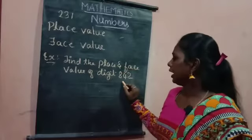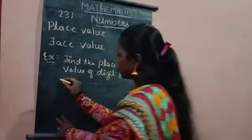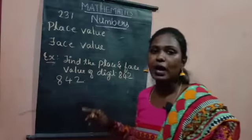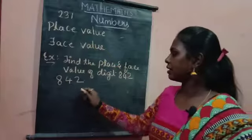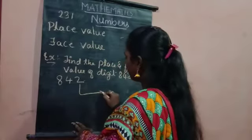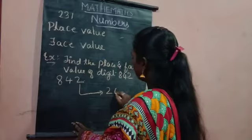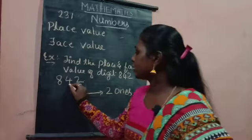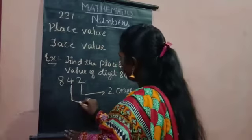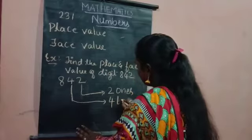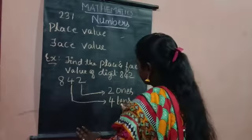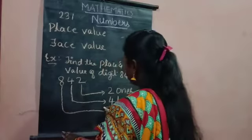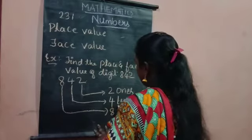For 842: two is in the place of ones, so there are two ones. Four is in the place of tens, so there are four tens. Eight is in the place of hundreds, so there are eight hundreds.